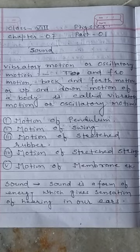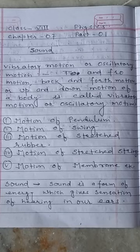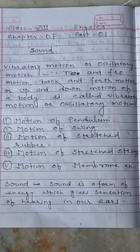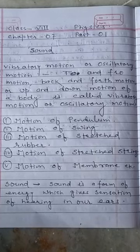There are some examples of vibratory motion or oscillatory motion: motion of a pendulum, motion of a swing, motion of a stressed rubber, motion of a stressed string, motion of the membrane of a tabla, etc. The vibration of a string, membrane, stressed rubber, swing, and pendulum are all examples of vibratory or oscillatory motion.